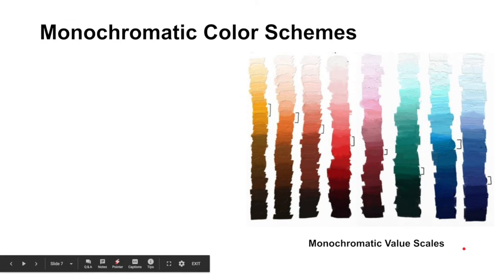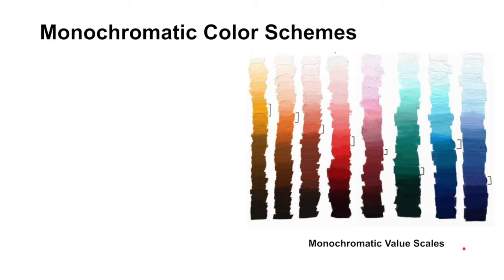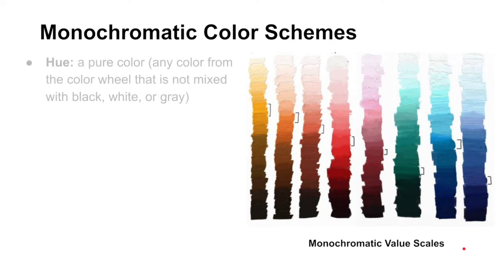Our next color scheme is monochromatic. And to understand monochromatic, there's a whole bunch of terminology to go in with it. But it's a relatively simple color scheme. So first we need to talk about a hue. And a hue is a pure color. So that will be any of those colors from the color wheel that we have. It's not mixed with black, white, or gray. So it's pure. It's straight from the primaries.